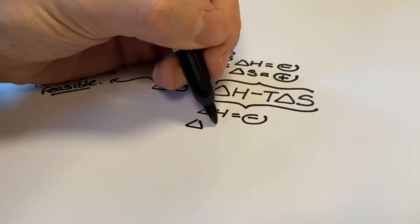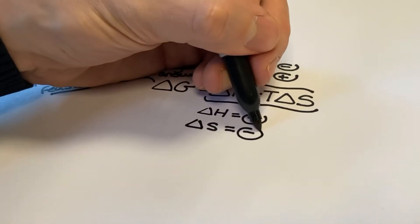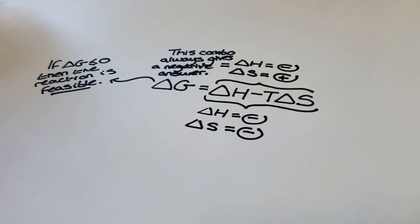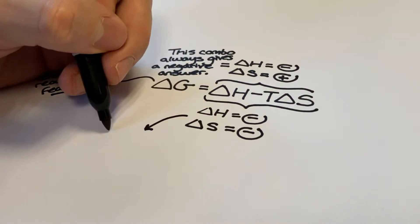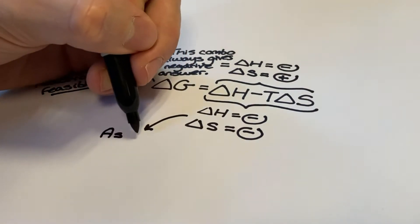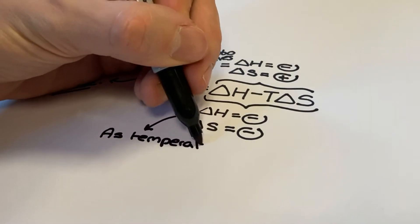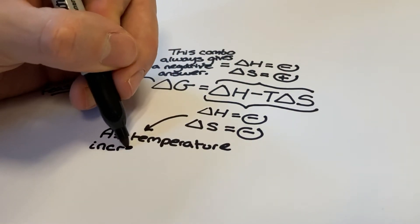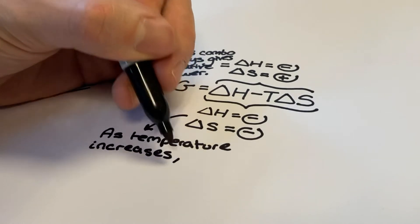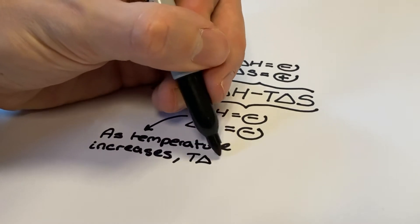Moving on, the next combination to consider is an exothermic delta H — a negative enthalpy change — and a negative value for delta S. I'd also like to remind you that if you have calculated the delta S value in a previous part of the question using products minus reactants, it's very likely your delta S value is in joules per kelvin per mole, and in these calculations you need to make sure that your value of delta S is in kilojoules per kelvin per mole.